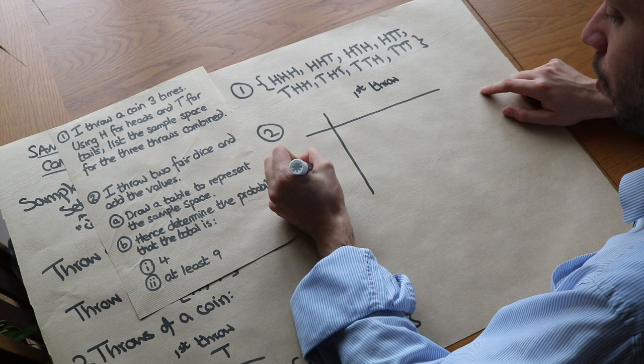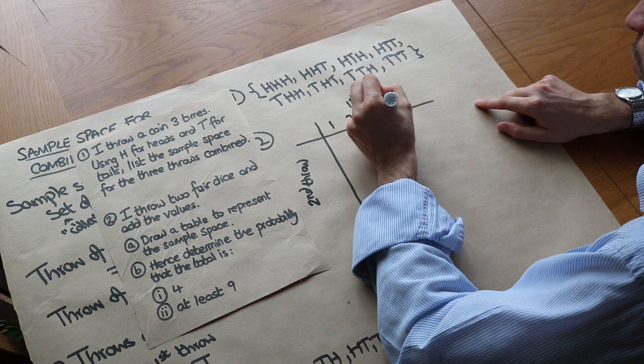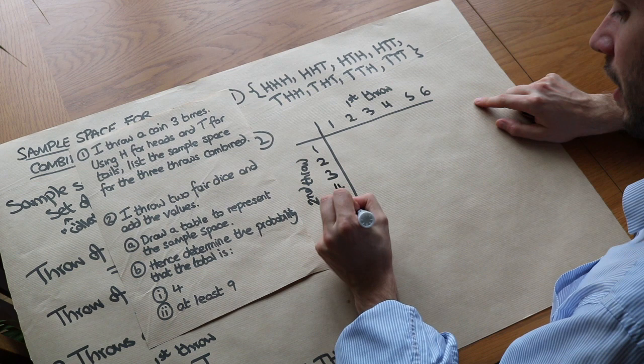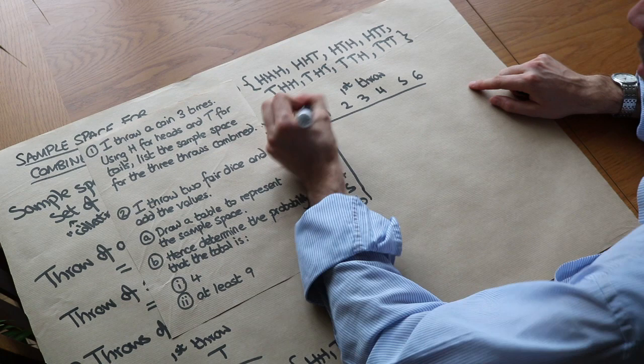And what could we get on each throw of a dice? Well we could get one, two, three, four, five, six. And get one, two, three, four, five, six. And it says that we're adding the values from the two throws. I'm just going to put a plus here so I don't forget what we're actually doing with the two numbers.